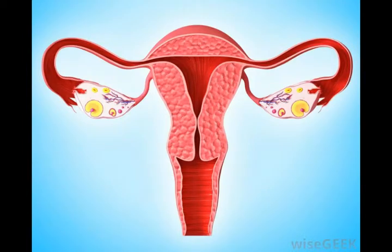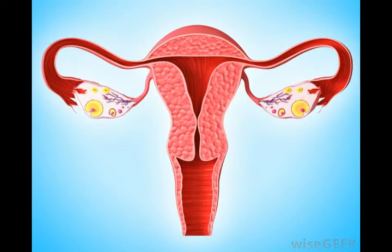The simple cuboidal epithelium are cube-shaped cells which line various surfaces and cavities throughout the body, including the eyes and thyroid gland. These cells perform actions such as secretion and absorption and also provide protection for different points on the body. This part of the epithelium is composed of a single layer of cube-like cells attached to a basement membrane and is plain in its appearance, compared to the stratified epithelium tissues.